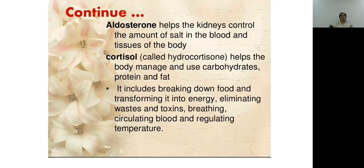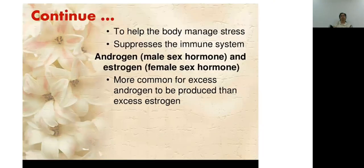Aldosterone helps the kidney maintain salt balance. Cortisol, or hydrocortisone, regulates carbohydrates, protein, and fat — it breaks down energy sources and increases glucose levels. Cortisol is also helpful in stress and suppresses the immune system. The sex steroids are mainly androgens — androgen is the main male sex hormone and estrogen is the female sex hormone.